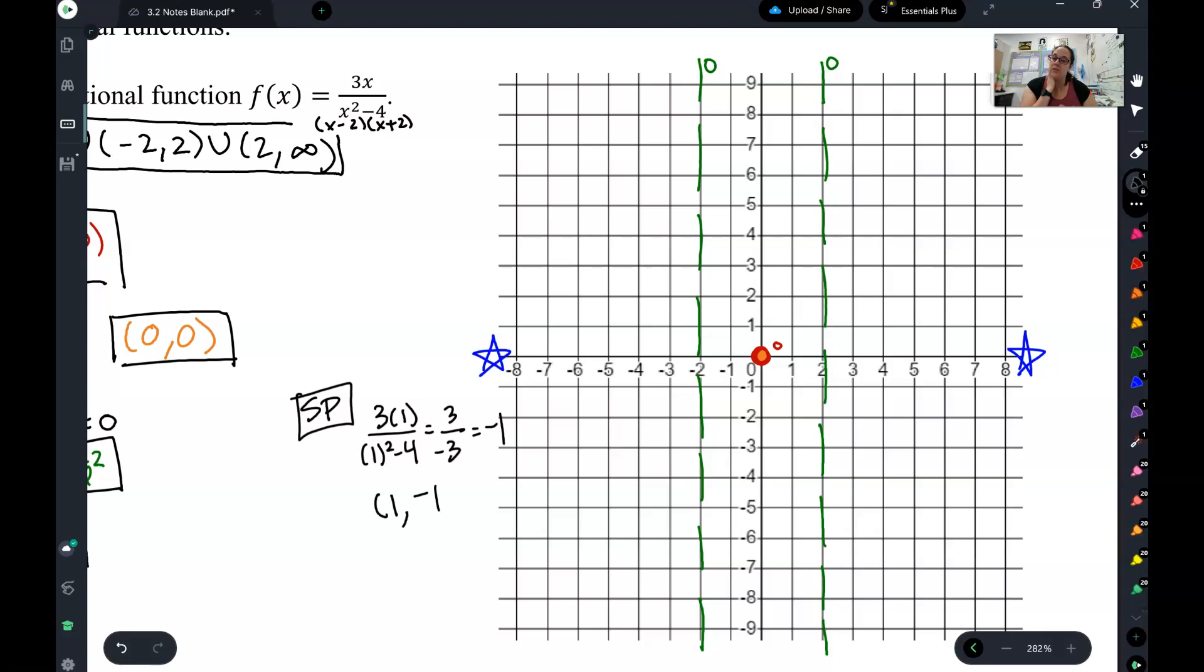So I can graph this point as 1, the number I plugged in, comma, negative 1, the answer I got out. So I can go to my graph and graph the point 1, negative 1. That's the answer when I plug 1 in, I get negative 1 out.